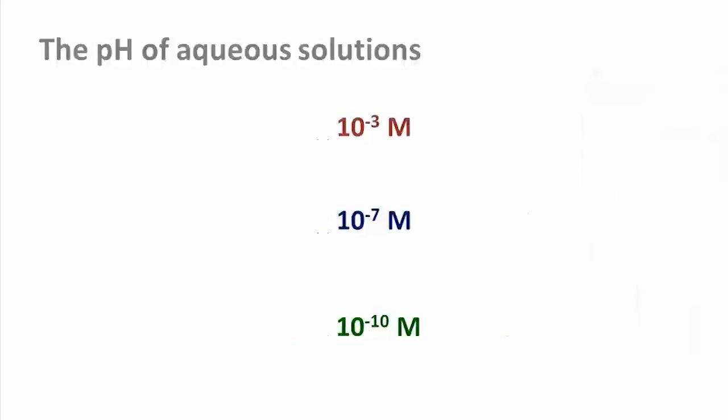This range of concentrations over many orders of magnitude would make it impractical to give the proton concentration in the regular scientific notation here. What we do instead is to use the logarithm to the base of 10 and turn that into a positive number. This is what is called the pH.